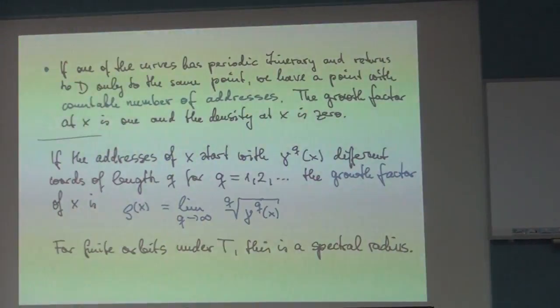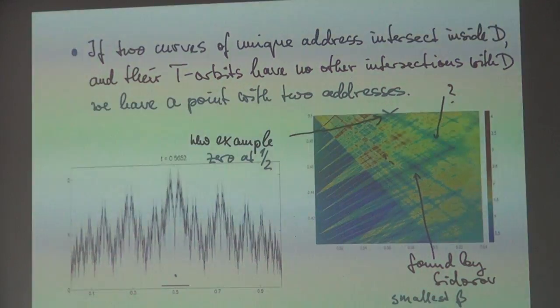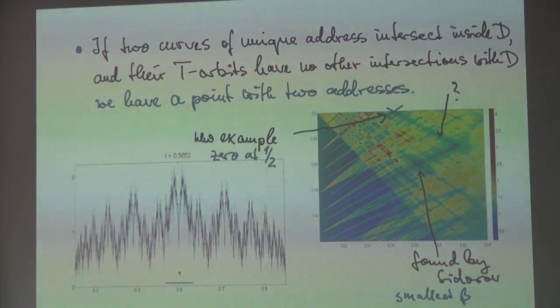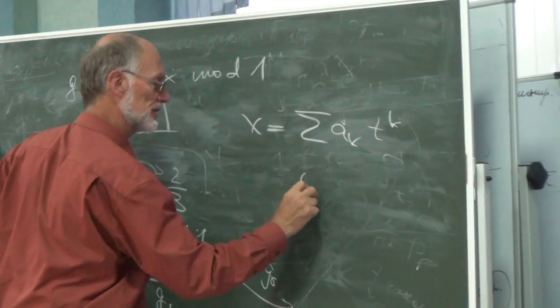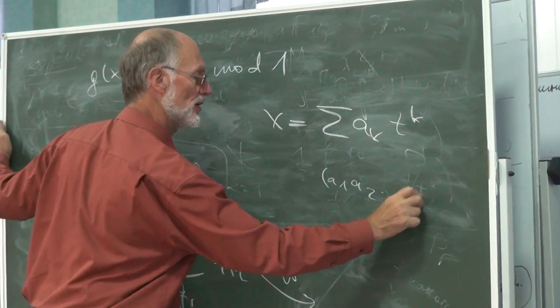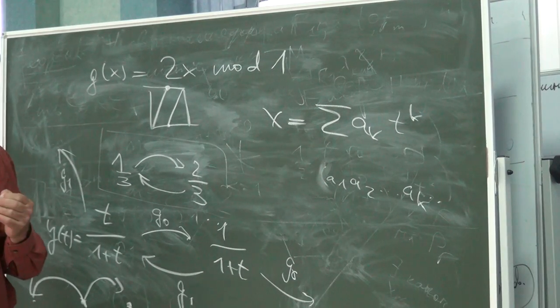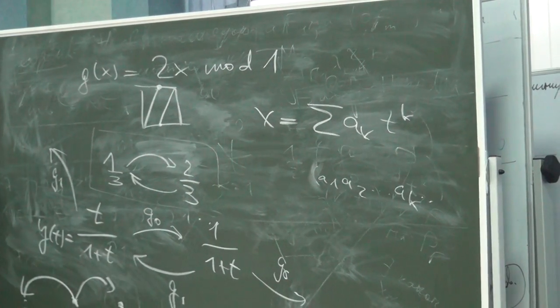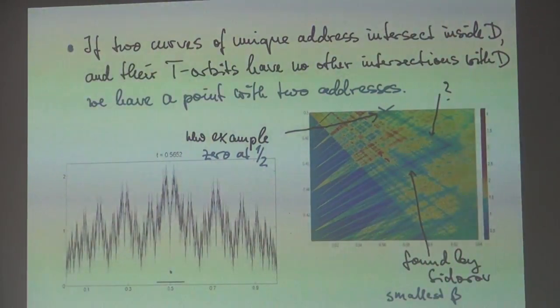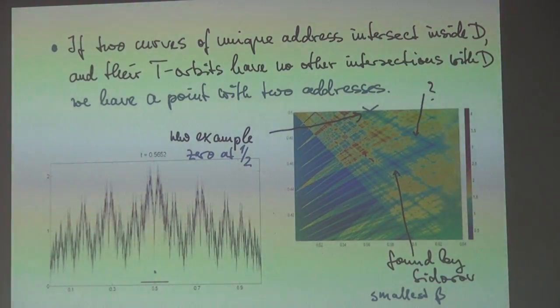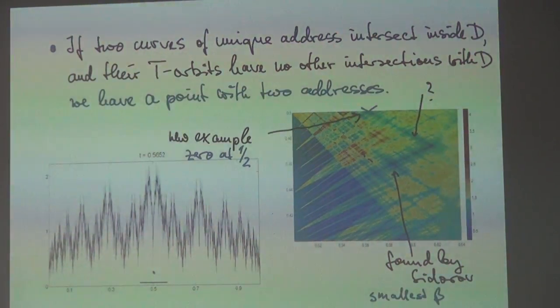What do you mean by address? Address is when I write x as sum a_k t to the k then a_k is called the address. a_1, a_2, it's called address or it's just the coefficients of representation. And you may have different addresses usually but in some rare cases you may have one address only one representation and also they should be unimportant because they have only one representation so the measure is zero there. Others have uncountably many representations.